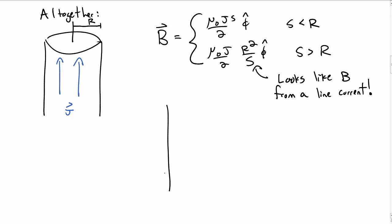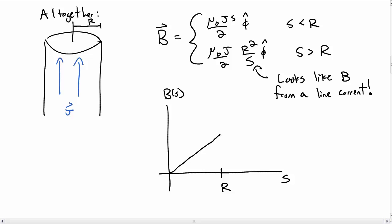Let's plot the magnetic field b as a function of s. Up to s equals r, it is linear. Outside of s equals r, it falls off like 1 over s.